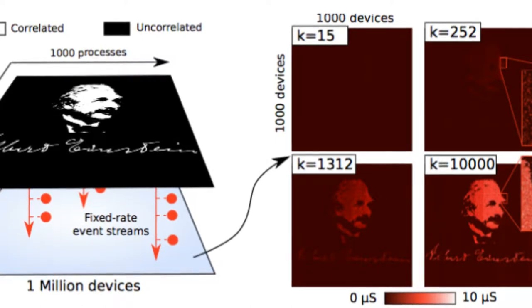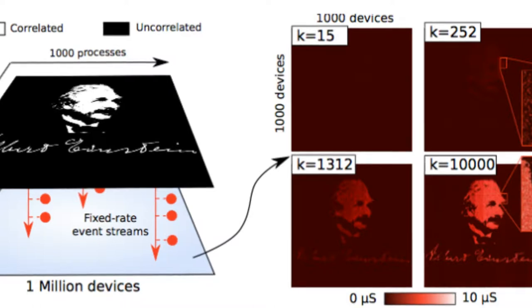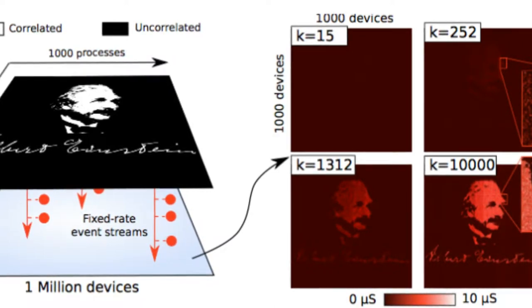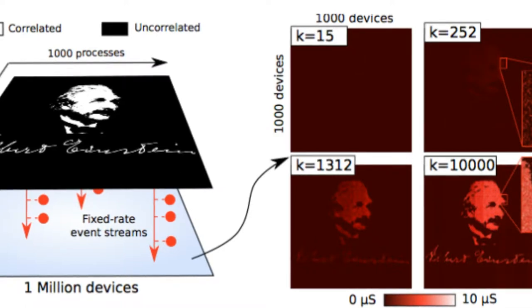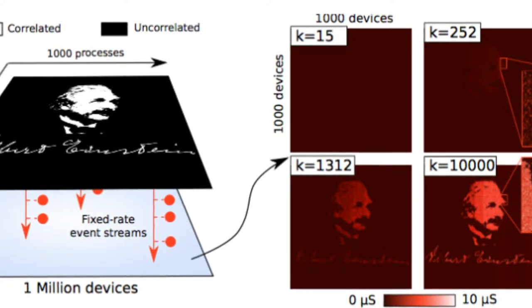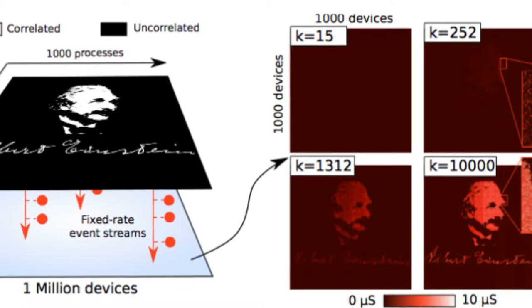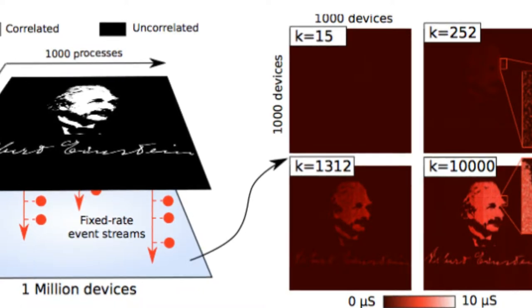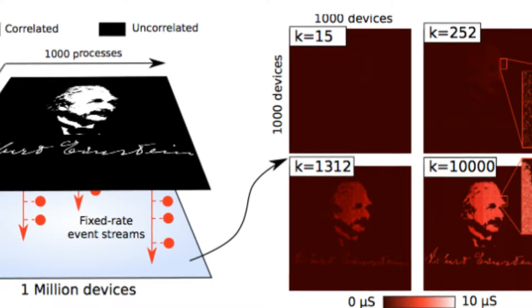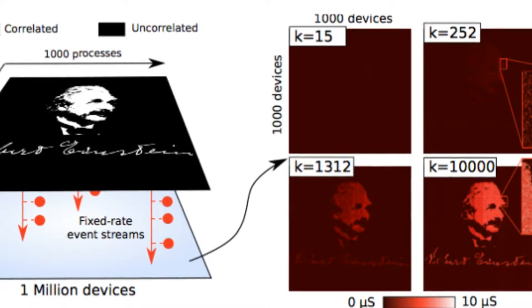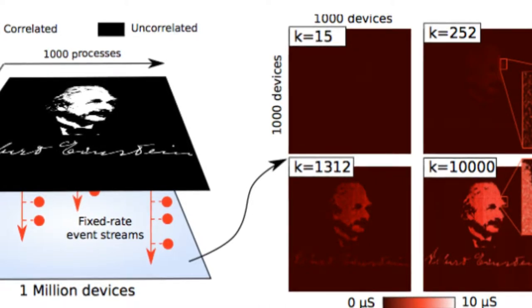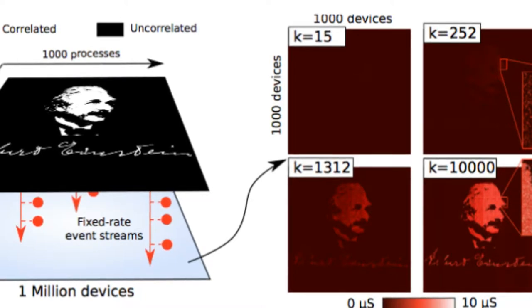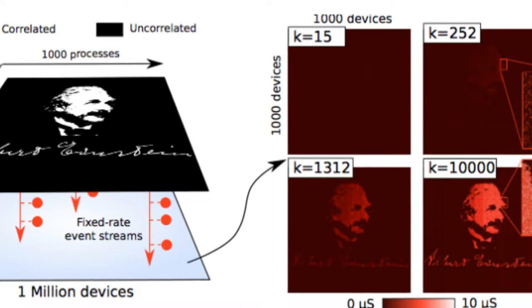Phase change memory is based on materials that can take two different forms as a solid. When cooled slowly from a liquid state, they'll form a crystalline material that is a decent conductor of electricity. If cooled quickly, they form a glassy, disordered structure that's an insulator. Once set, the states remain stable, allowing it to provide long-term memory storage even in the absence of power.